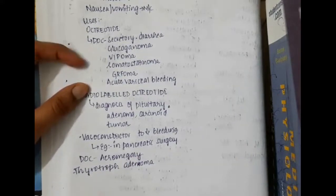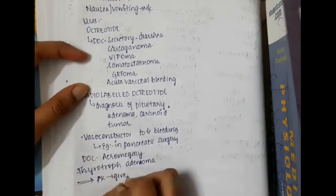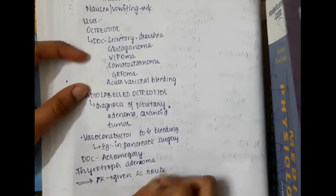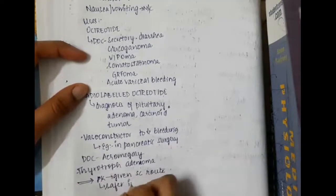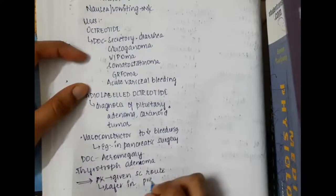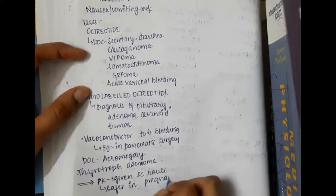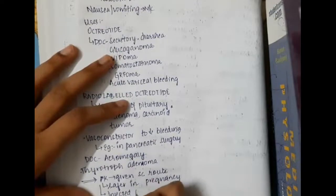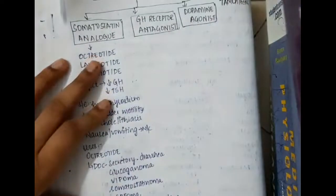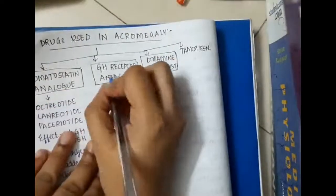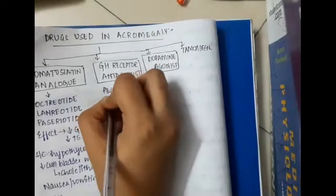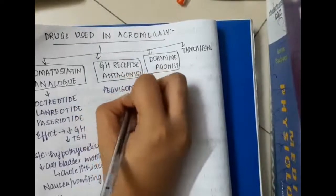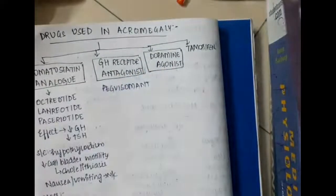Regarding the pharmacokinetics of somatostatin analogs: they are given by the subcutaneous route, are safer in pregnancy, and are injected once monthly.